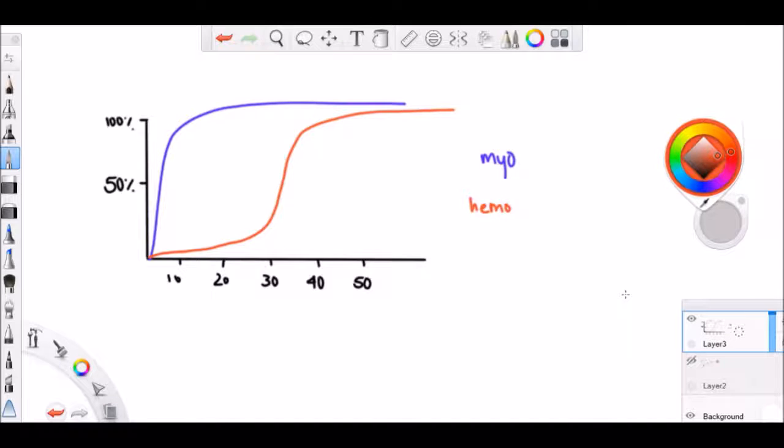Because of hemoglobin's positive cooperativity, it gives a sigmoidal shape to its curve.